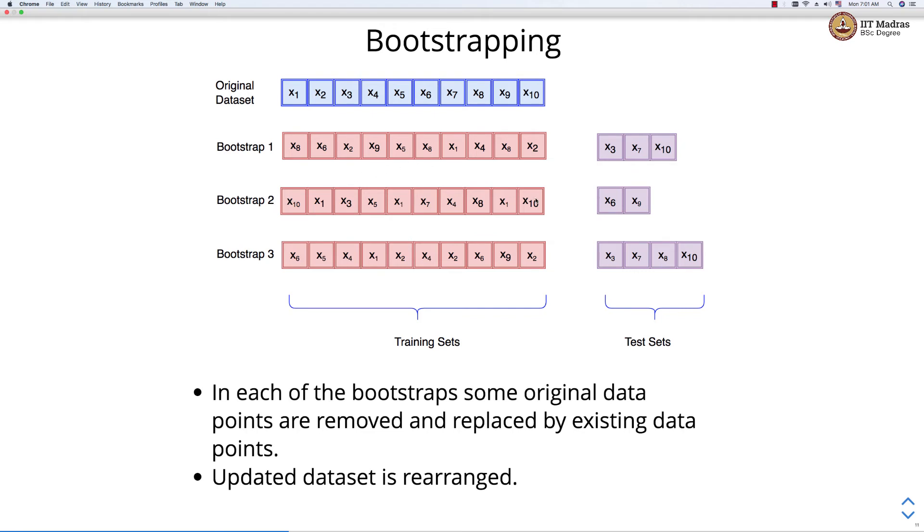In the second bootstrap, we again randomly select 10 data points with replacement and we get the second training set and whatever is not there in the bootstrap is used as a test set. In similar manner, we construct the third bootstrap and we can create q such bootstraps, where q is the number of classifiers or number of estimators that we want to train.